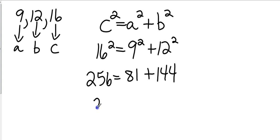And so, when I add 81 and 144, that gives me 225. Which obviously, in this case, 256 does not equal 225. So these sides would not form a right triangle. We can make a regular triangle with them, but we cannot make a right triangle with them.